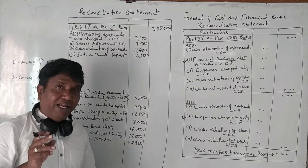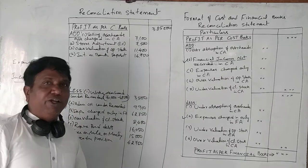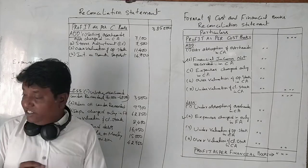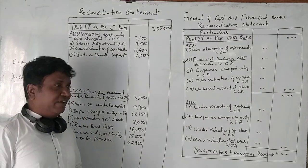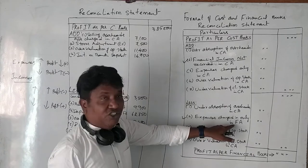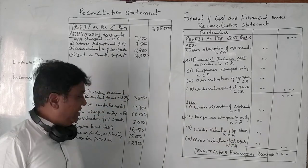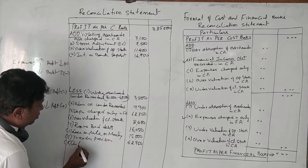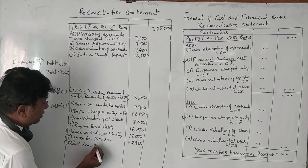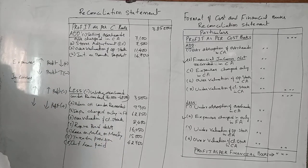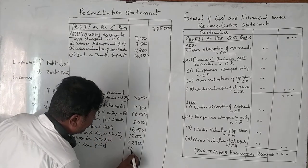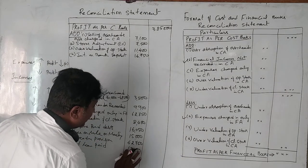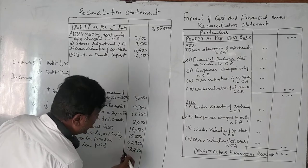The last point is interest on bank loan paid. When you borrow a loan from a bank and pay interest, such interest is not taken in cost accounting. Any expense charged only in financial accounting but not in cost accounting should be deducted. Interest on bank loan: 18,150 rupees to be deducted.